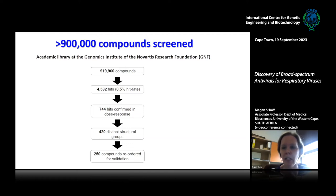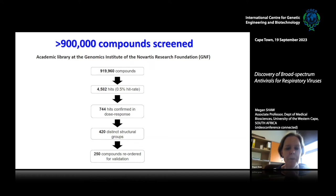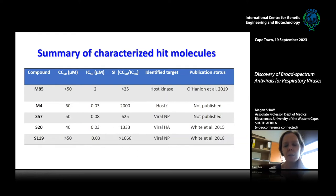We screened a library of just over 900,000 compounds available at the Genomics Institute of the Novartis Research Foundation, commonly known as GNF — their academic library of mostly commercially available, non-proprietary compounds. We got to make use of all their impressive high-throughput screening facilities with robotic equipment. Our hit rate from the screen was 0.5%. We took all those initial hits and assayed them in dose-response, which whittled down that number further. Chemists then looked at the structure of the compound hits and grouped them by structural similarity, and we chose certain compounds for validation.